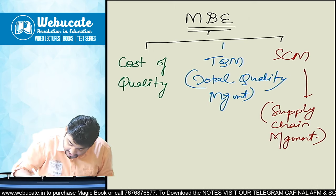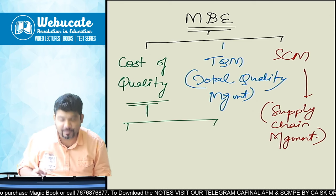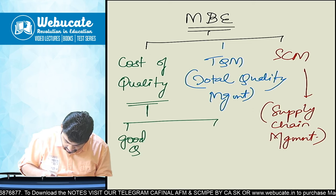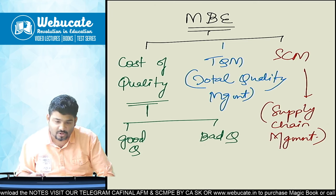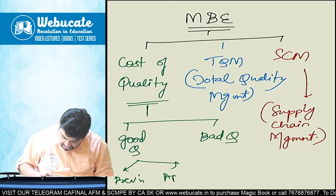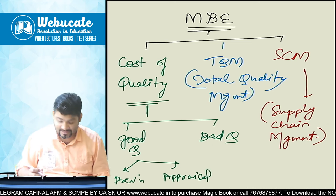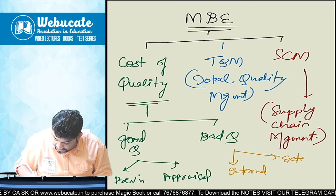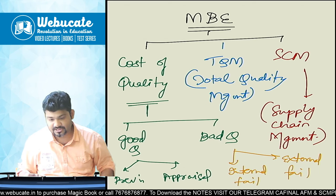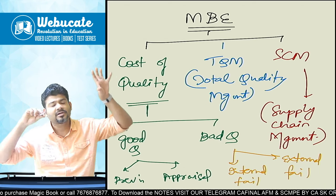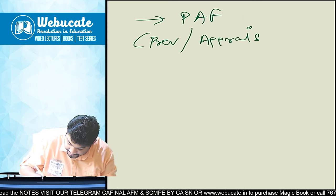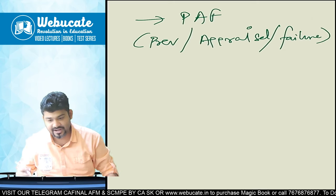Cost of quality was divided into two parts: cost of good quality and cost of bad quality. Cost of good quality had two divisions — prevention and appraisal cost. Bad quality was further subdivided into internal failure and external failure. We also did the PAF model — Prevention, Appraisal, and Failure.